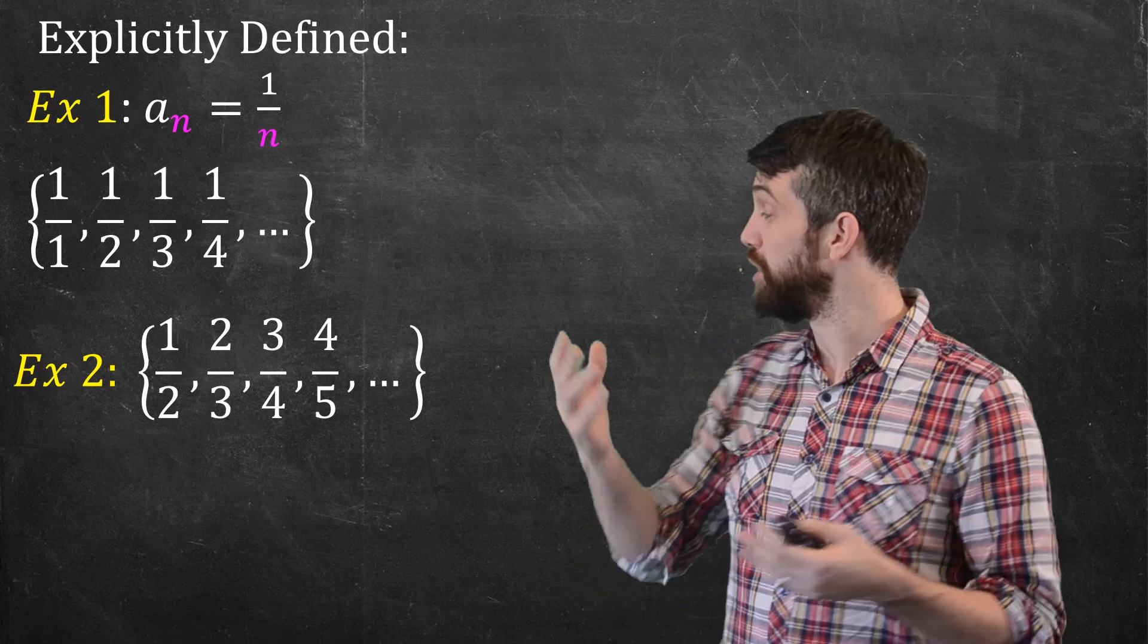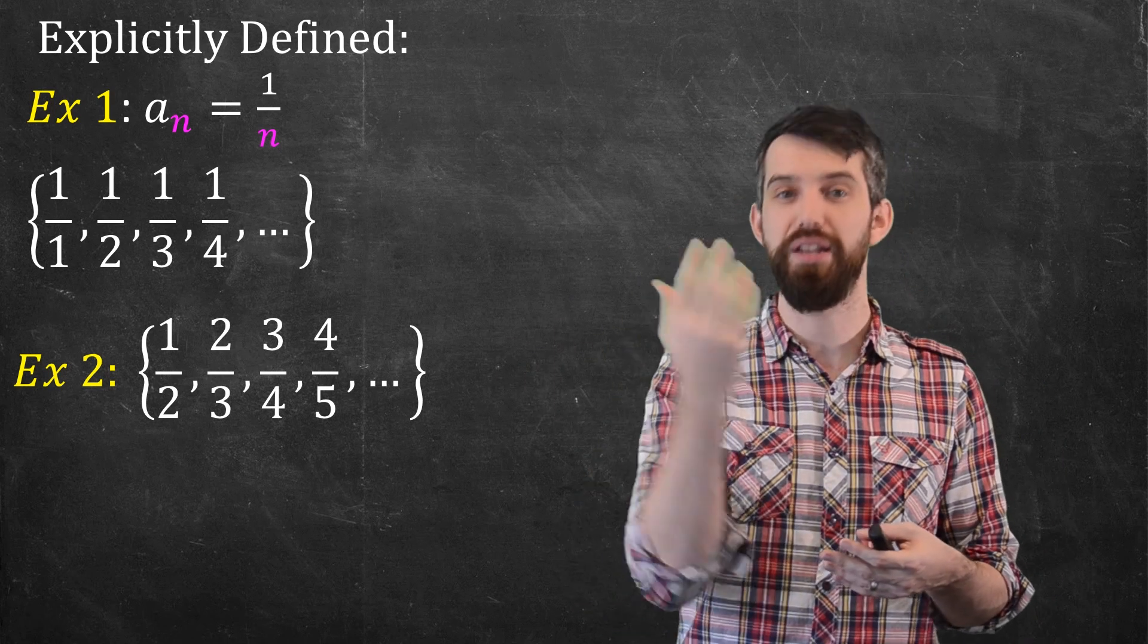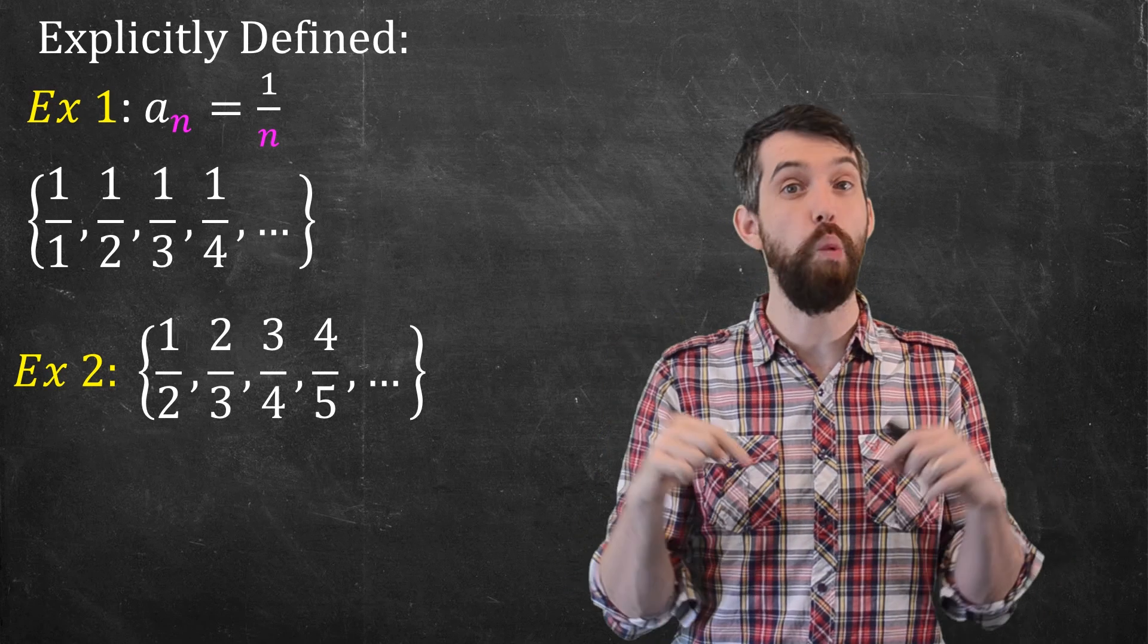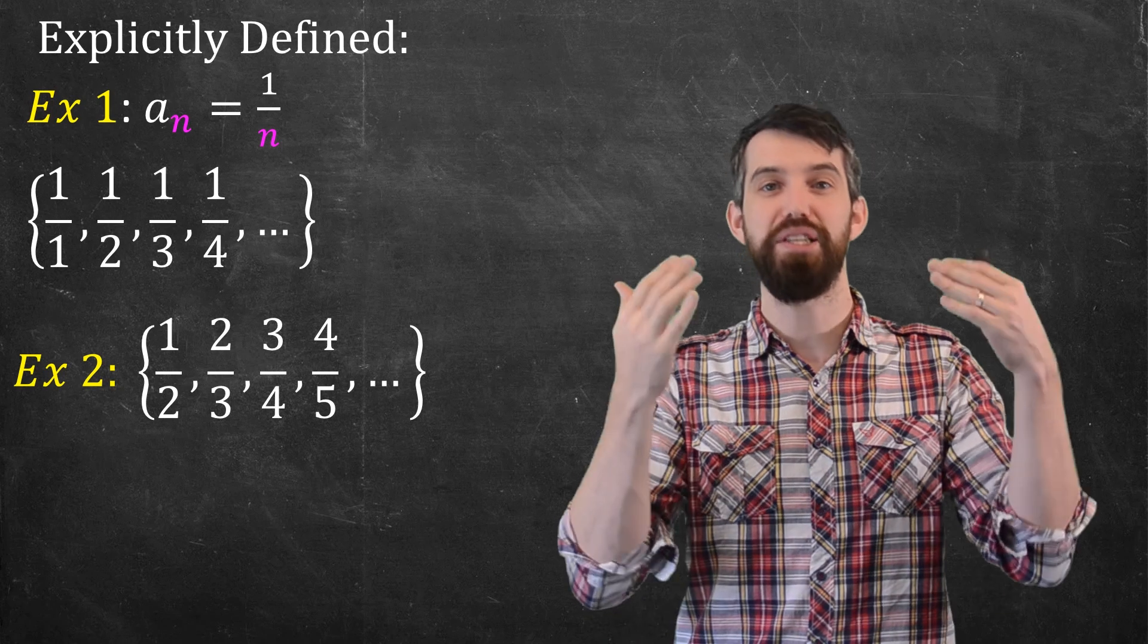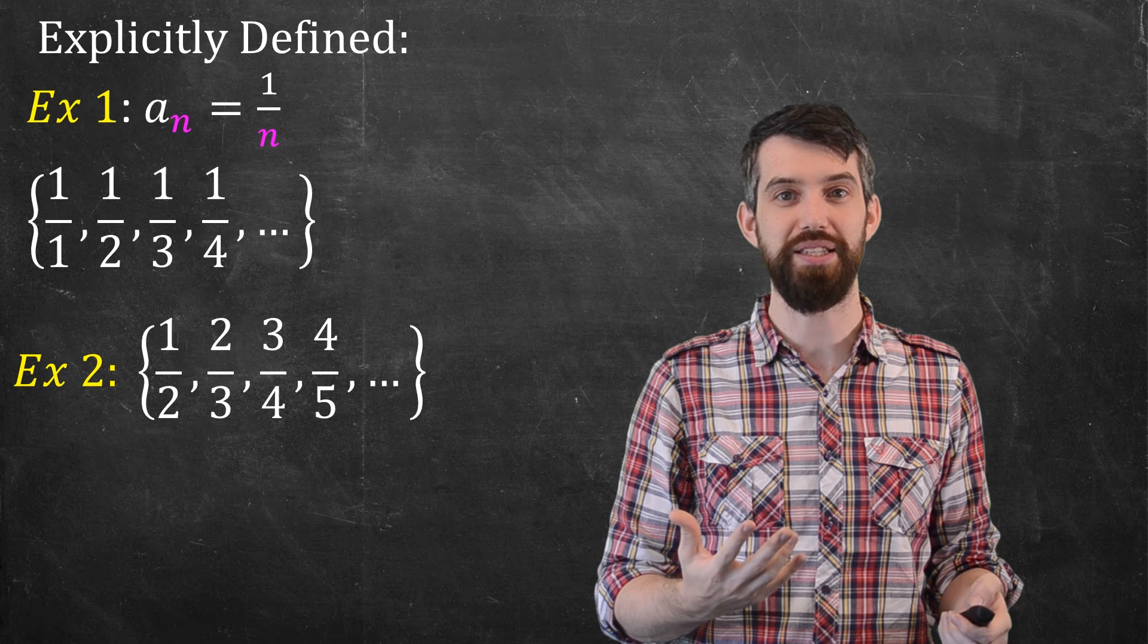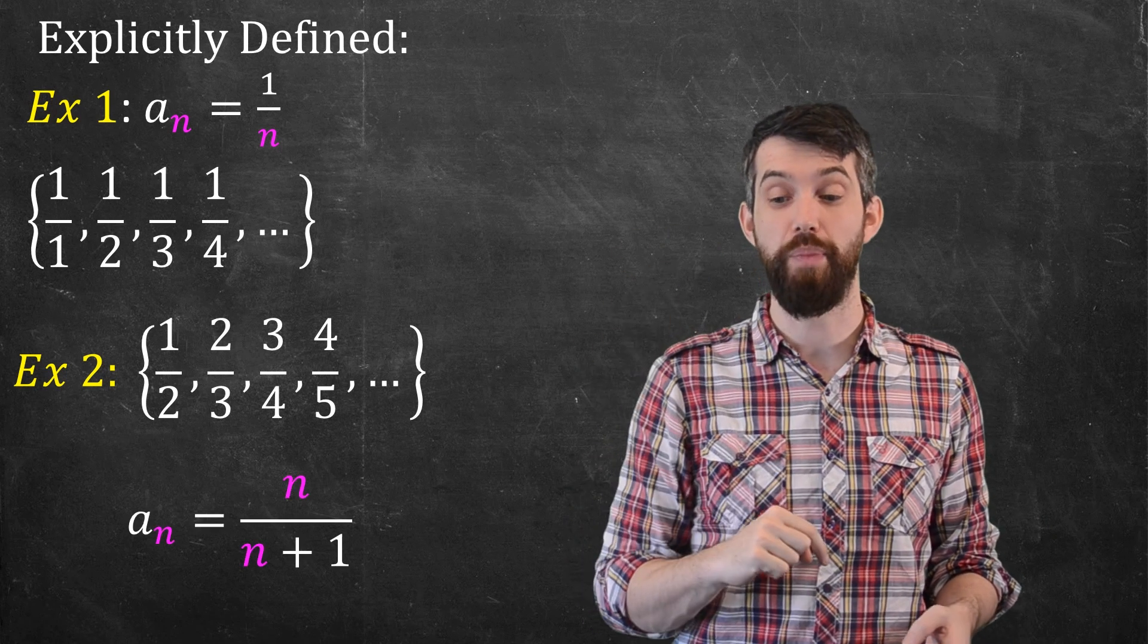When I look at it, I look specifically at the numerators. I see the first term's got a 1 in the numerator, the second a 2 in the numerator, the third a 3 in the numerator. But in the denominator, it's all 1 higher than that. The first term has a 2 in the denominator, the second term has a 3. So the generic formula for this is going to be an n on the top, but an n plus 1 on the bottom.